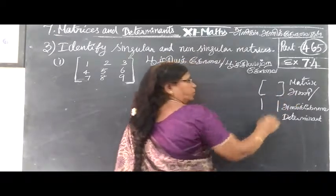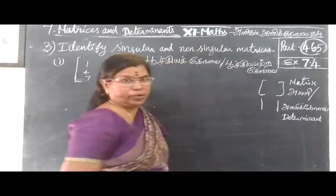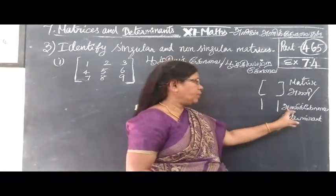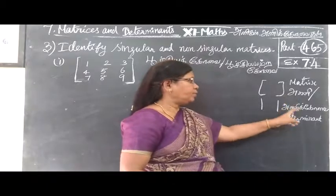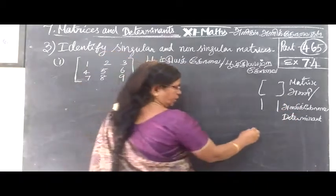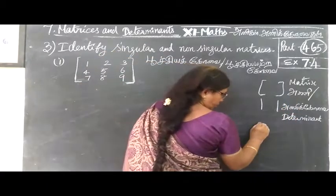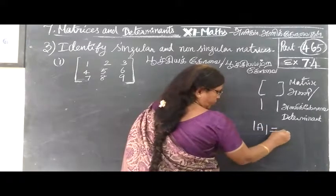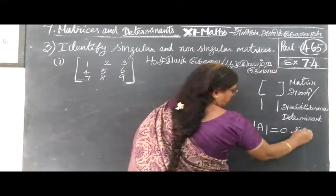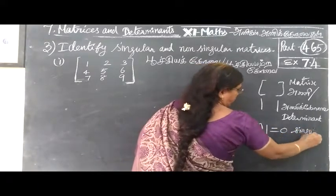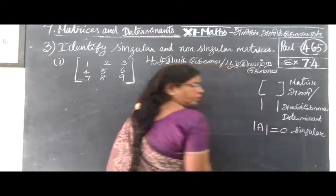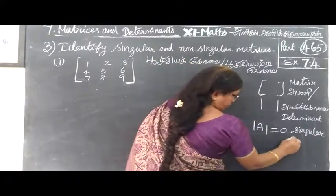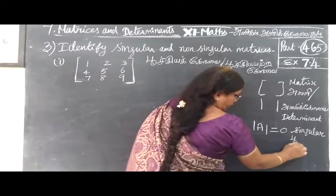Question number 3. Let's use this matrix. If we find the determinant, suppose our determinant is zero, this is a singular matrix. It is singular.